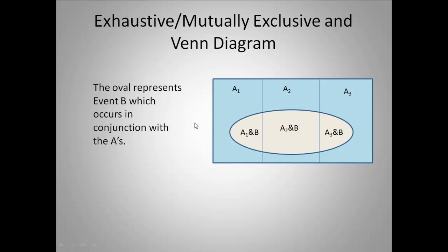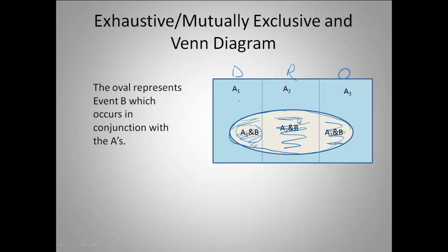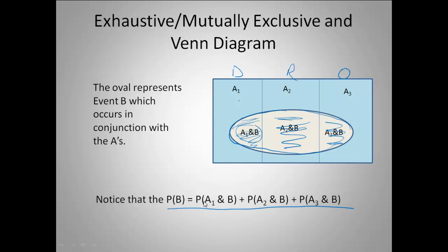When we add the video game piece, we introduce another characteristic that overlaps our exhaustive categories. For example, if the categories were Democrats, Republicans, and Others, the overlapping event B might be owning a dog. One area would be Democrats who own dogs, another the percentage of Republicans that own dogs, and another the percentage of Others. Event B is something that occurs in conjunction with our exhaustive pieces, and the total probability of B is the sum of these joint probabilities.